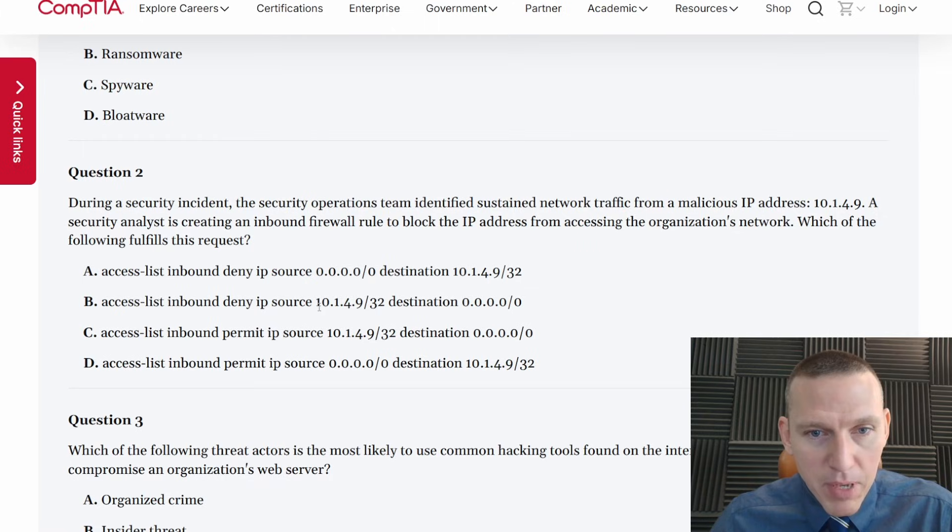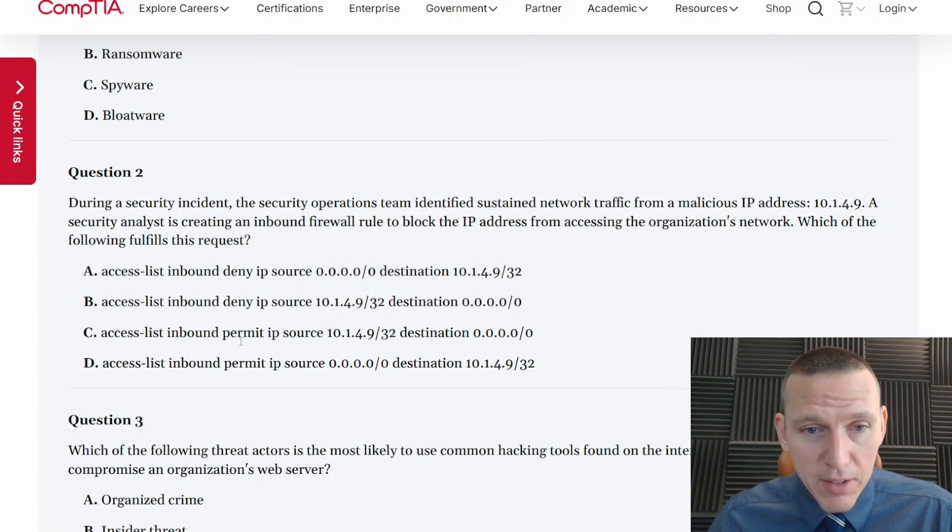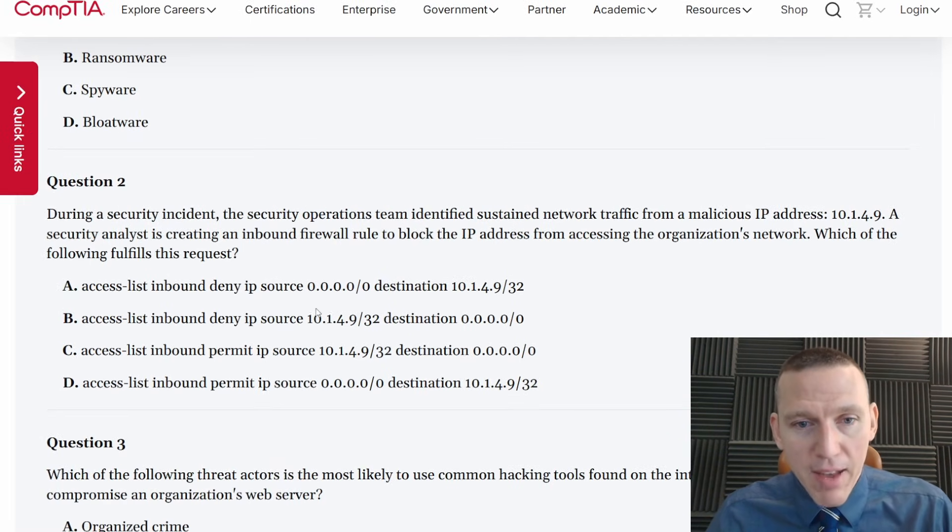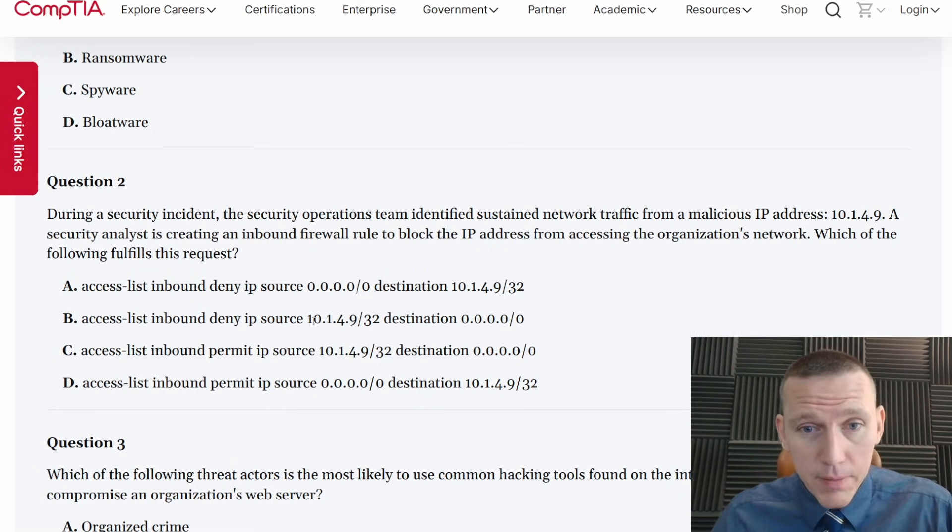Access list inbound deny IP source. Well, the source has to match this. So we just want to look at where source matches this and we don't want permit. So it has to be none. Access list deny IP source. Destination and destination you put 0.0.0.0. You're basically saying any IP address. It has to be a deny rule. So we can easily X out these two. And then it has to have that IP address here. So the source would be the malicious IP. So that's B.